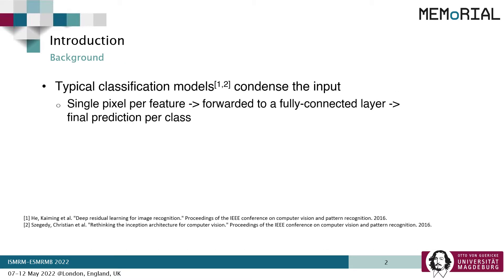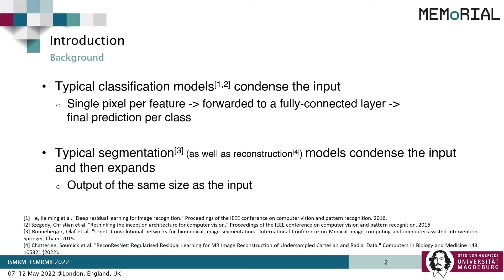Typical classification models, for example ResNet or InceptionNet, repeatedly condense the input image using strided convolutions or pooling layers. Finally, the most condensed form — typically multiple features but just one single pixel per feature — is then forwarded to a fully connected layer to obtain the final prediction. In contrast, a typical segmentation model condenses the input in a similar fashion to obtain a latent representation, which is then expanded multiple times using transposed convolutions, interpolation plus convolution, or even unpooling layers to finally obtain the original input size back.